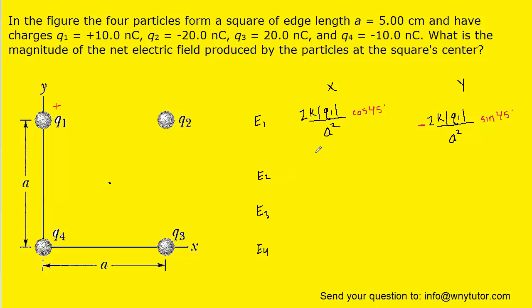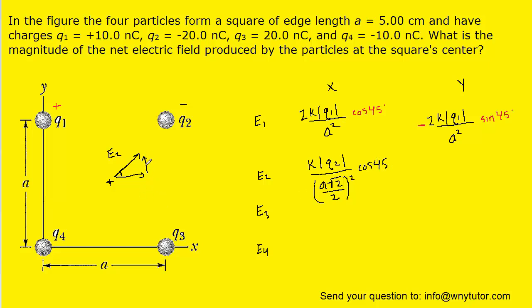For E2, we use the same expression: the constant multiplied by the magnitude of the charge divided by the distance squared, with the distance to the center being A√2/2. Q2 is a negative charge, so a hypothetical positive test charge at the center would be attracted towards Q2 — that is the direction of E2. The x component is adjacent to the 45-degree angle, so we use cosine. The y component is opposite, using sine, and since it points straight upward, it is positive. We simplify the denominators as before.